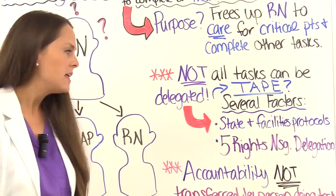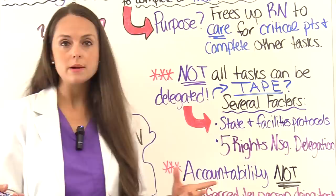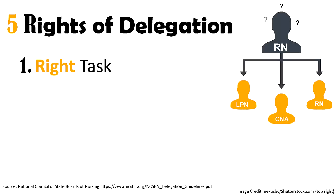Another factor is the five rights of nursing delegation. The first right is right task — as the RN, can you actually delegate this task? Is it within your scope of practice to delegate to an LPN or nursing assistant? You need to ask yourself: is this a low-risk task with a low probability of problems, requiring no outside-the-box thinking? It is very straightforward. And does this task require TAPE — teaching, assessment, planning, or evaluating? If it does, only the RN can do it.